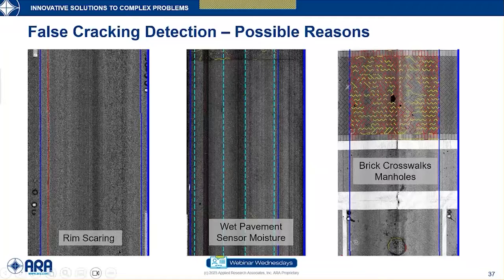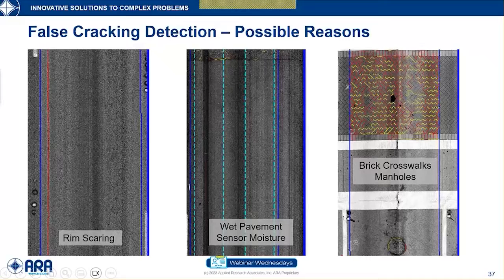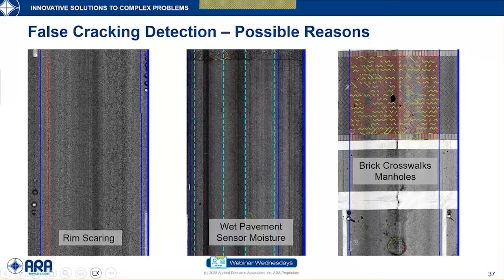There are still some outliers—sections where operators rated the pavement a 10 but the LCMS detects cracking. Most false crack detection cases fall into three categories: rim scarring, where a blown tire's bare rim scars the pavement leaving marks that look like cracks; moisture in the sensors, which produces a dark stripe appearing as heavy cracking; and brick crosswalks and manhole covers, which are also detected as cracking. We address these by adding crack invalidation events to tell the system to ignore cracking between those two markers.